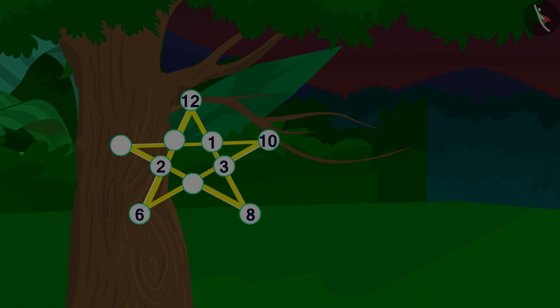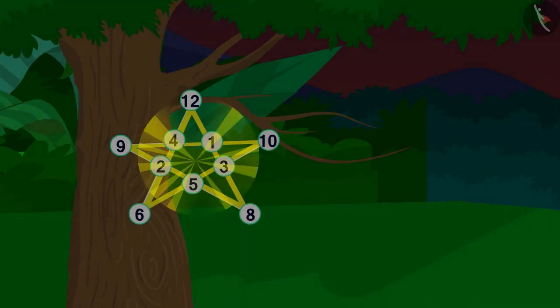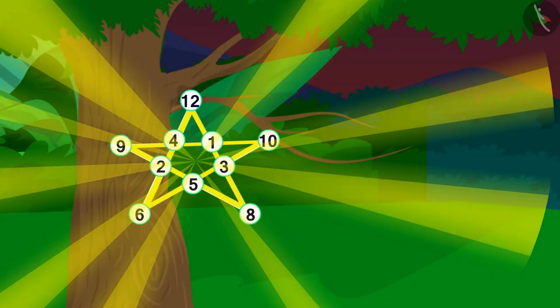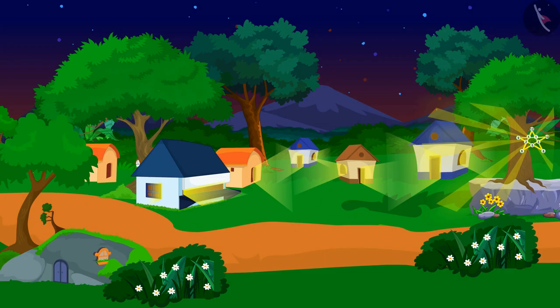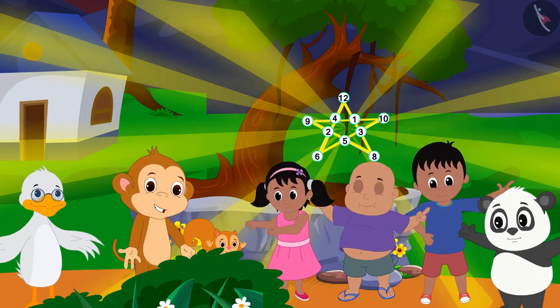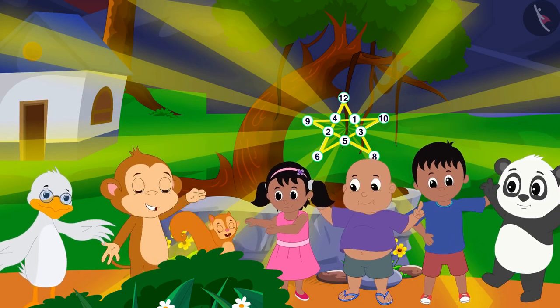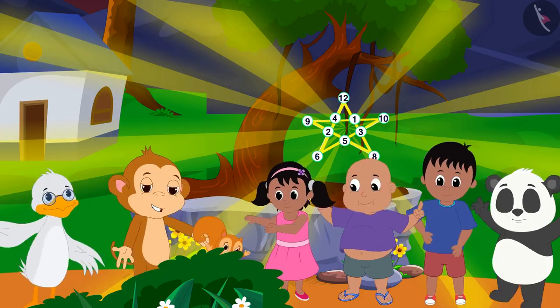As soon as the villagers filled the blanks of the star, light started coming out from the star and the electricity of the village resumed. All the villagers got excited and started dancing happily.